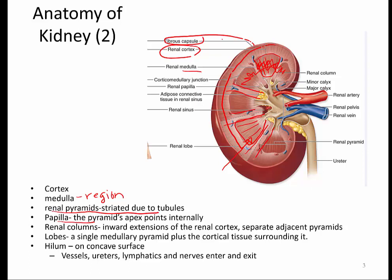A lobe is a medullary pyramid plus the cortical tissue around it. In this kidney diagram there are six lobes visible. The hilum is the indented region where vessels such as the renal artery and vein enter and exit. The ureter begins off of the renal pelvis, which is located in the hilum. Lymphatic vessels and nerves also enter and exit the kidney at the hilum.